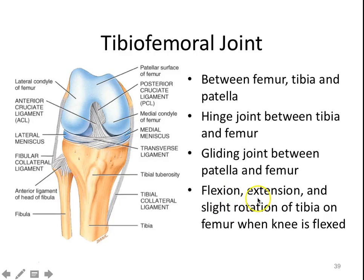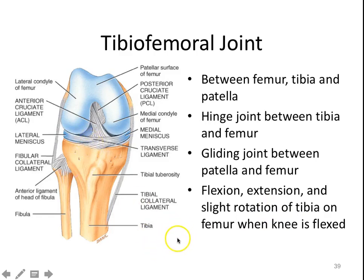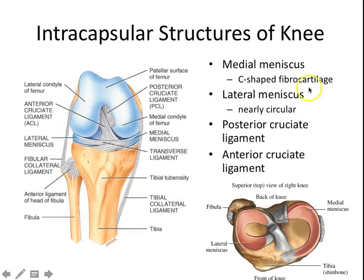As a hinge joint, we have flexion and extension. When you flex your knee, you can also get a slight rotation of the tibia — not a lot, but some. We also have menisci building up that joint, making the socket slightly deeper. In a superior view of the knee, you can see the lateral meniscus and the medial meniscus, again making that socket a little bit deeper.